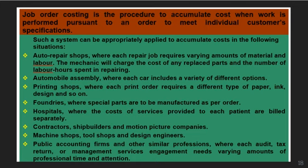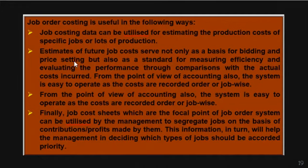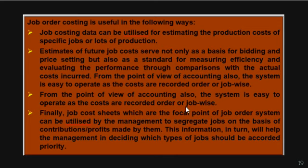Job order costing is useful in many ways: it can be utilized for estimating the production cost of specific jobs and estimates of future job costs. From an accounting point of view, the system is easy to operate as costs are recorded order- or job-wise. Finally, job cost sheets — the focal point of the job order system — can be utilized by management to segregate jobs on the basis of contributions or profits made by them.